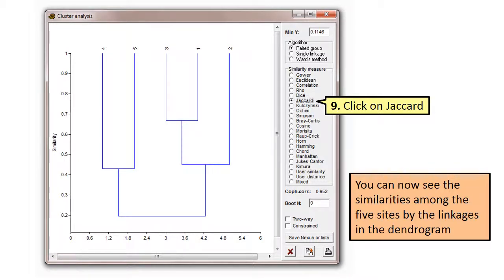This indicates that you are using presence and absence data. You will now see a dendrogram. This dendrogram is what we are going to use to interpret our results, for it shows the similarities between the sites based on the distribution of tree species.